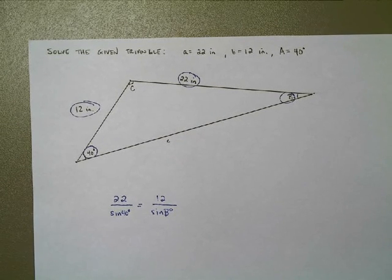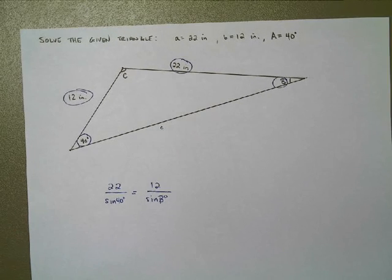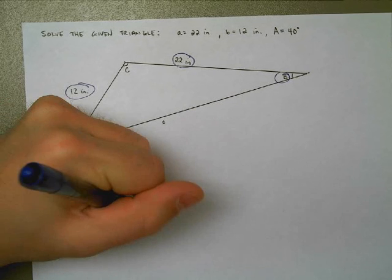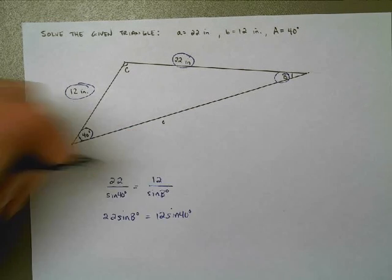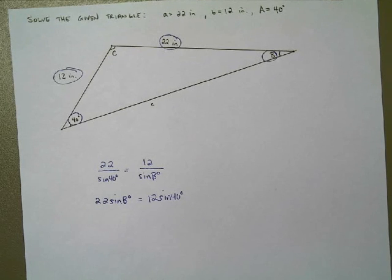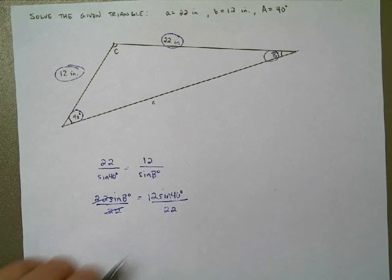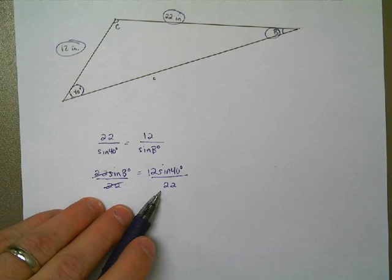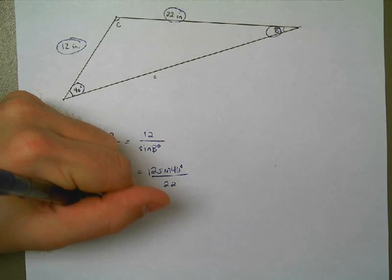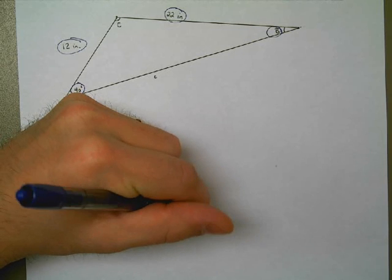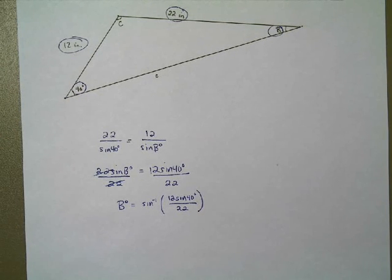I'm going to use this proportion to solve the problem. This becomes a cross-multiplication problem: 22 times the sine of B degrees is equal to 12 times the sine of 40 degrees. Cross-multiplying gets me there. To get sine of B by itself, I divide both sides by 22. This ratio tells me what the sine of B is. In order to figure out what B actually is — the angle — I have to do the arc sine, sine to the negative 1, of that fraction.